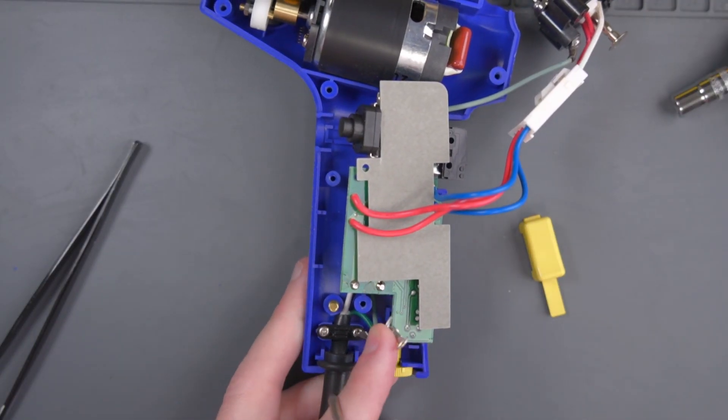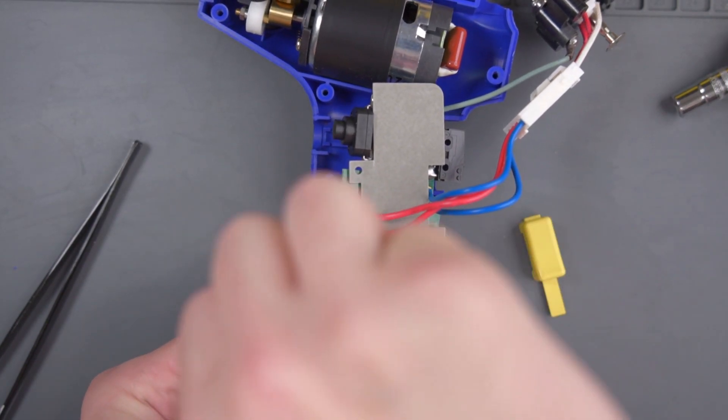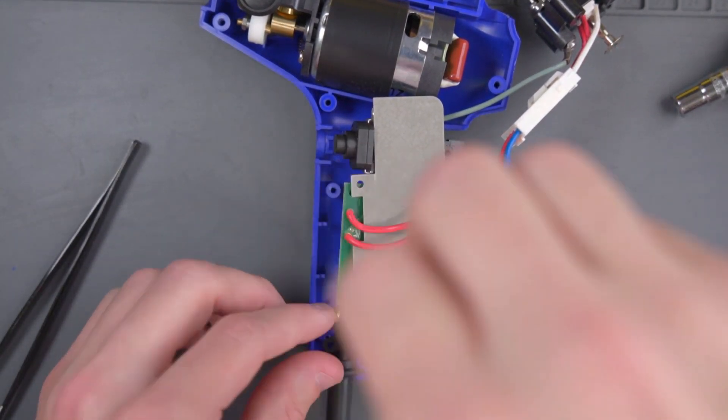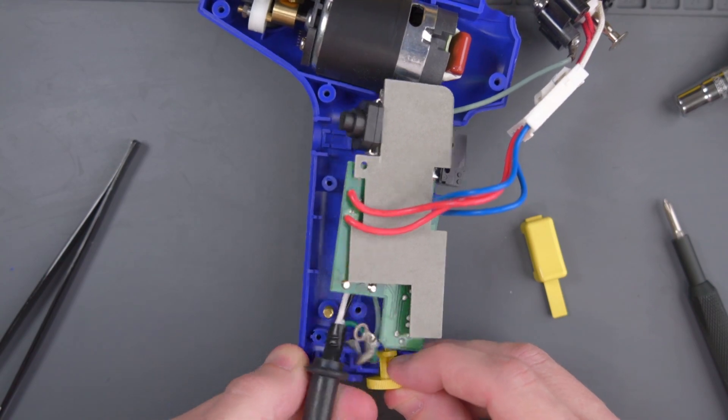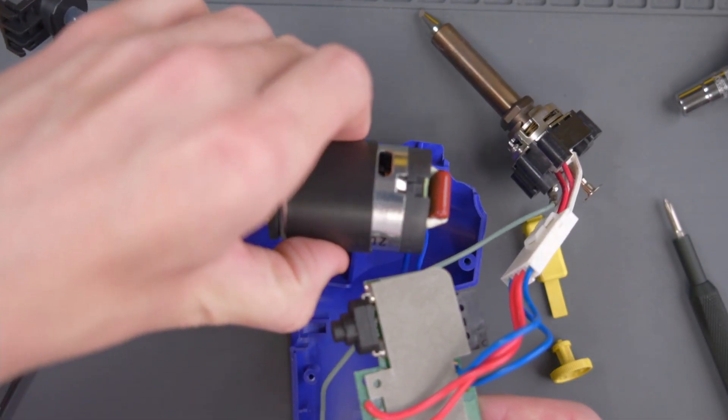There was one more nut at the bottom. The only thing that's left is this little retention bracket that keeps the wire secure. Now I should be able to take this whole thing out and get rid of the old broken shell.